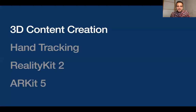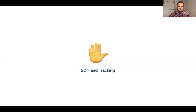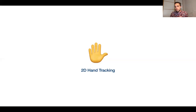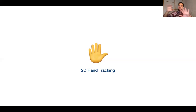That's all about 3D content creation. Now let's talk about hand tracking. Last year, the Vision framework — the computer vision framework from Apple for iOS developers — was announced to have 2D hand tracking in screen space, but not in 3D space. This year there are a bunch of new features.